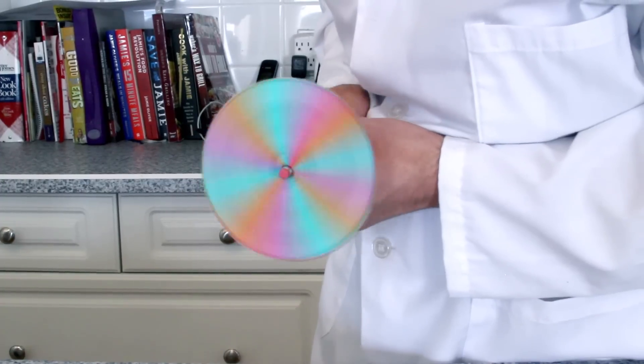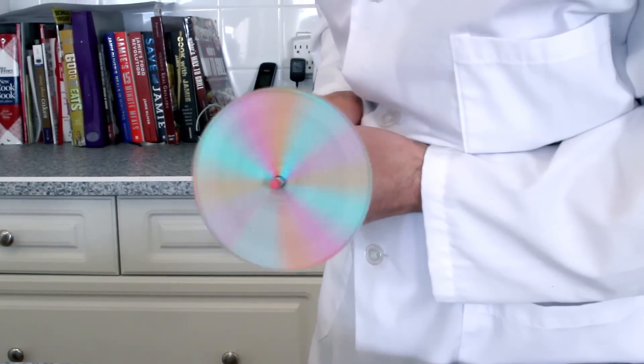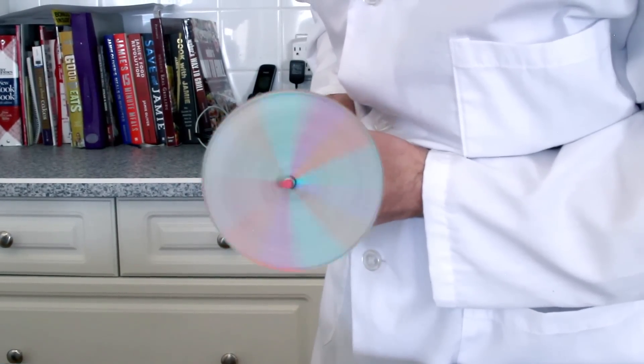In Newton's original experiment, he colored his disc with all seven colors of the rainbow, instead of only using red, blue, and green.